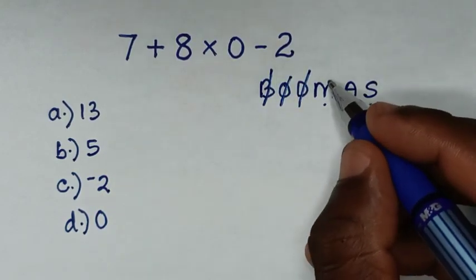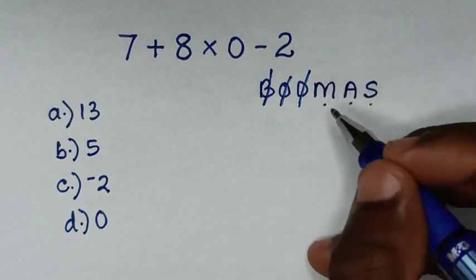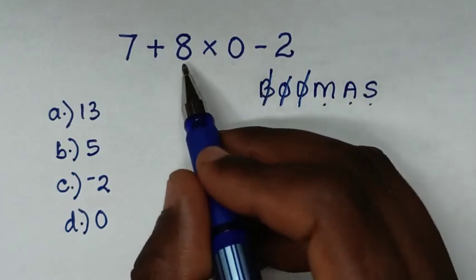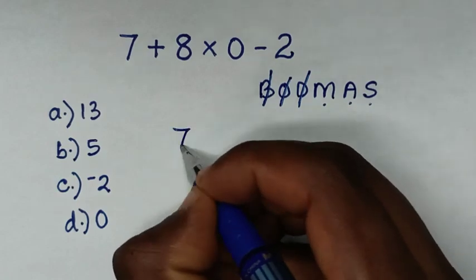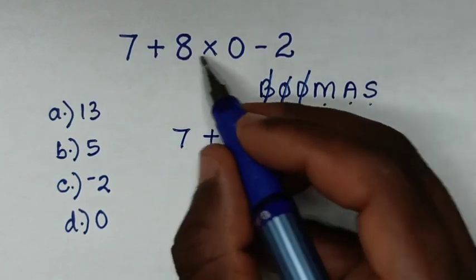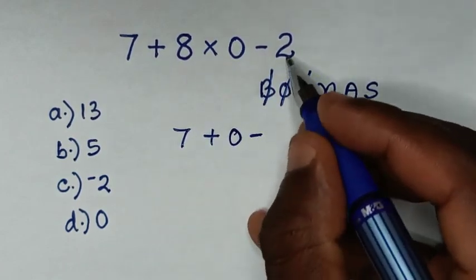So we'll start to deal with this multiplication first, of 8 times 0, which is 0. So it will be 7, then plus, this time this is 0, then minus 2.